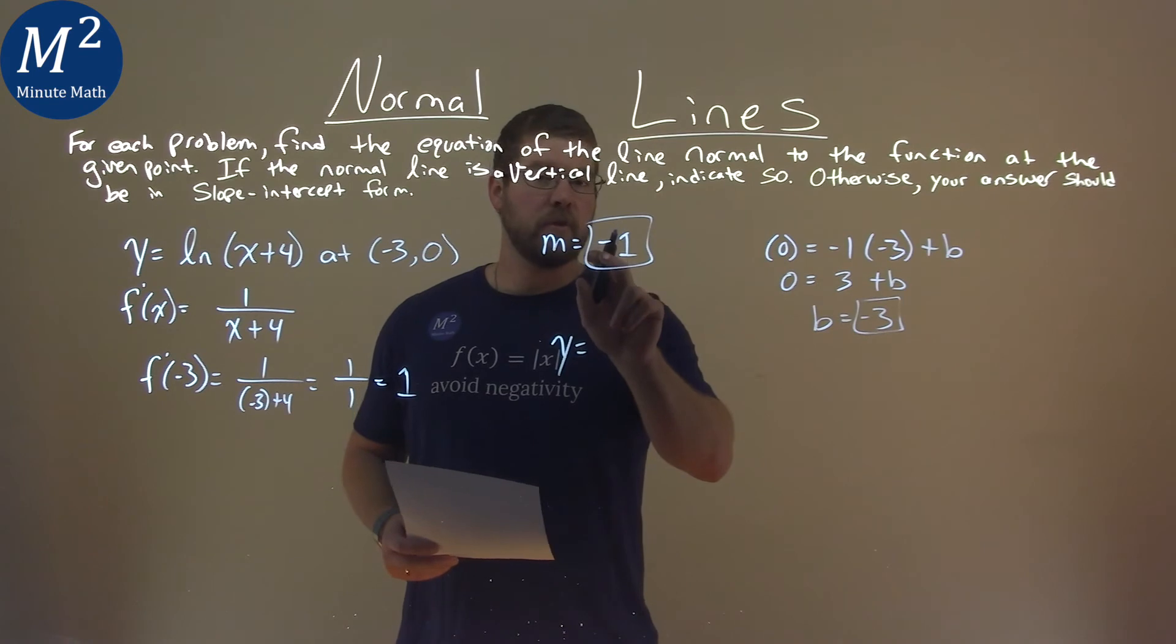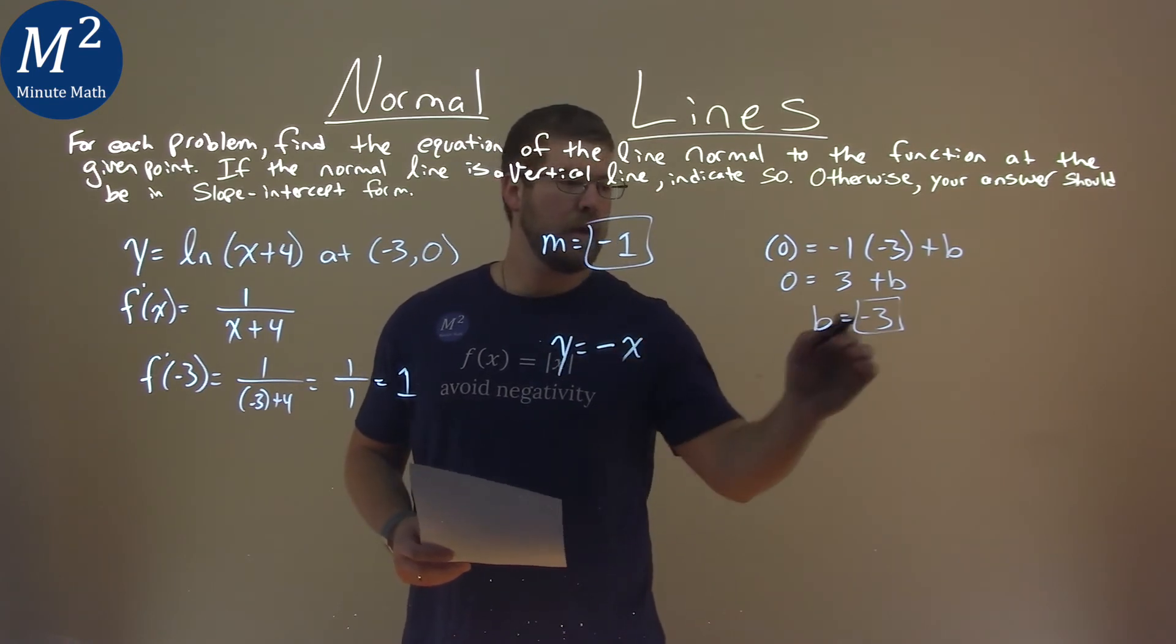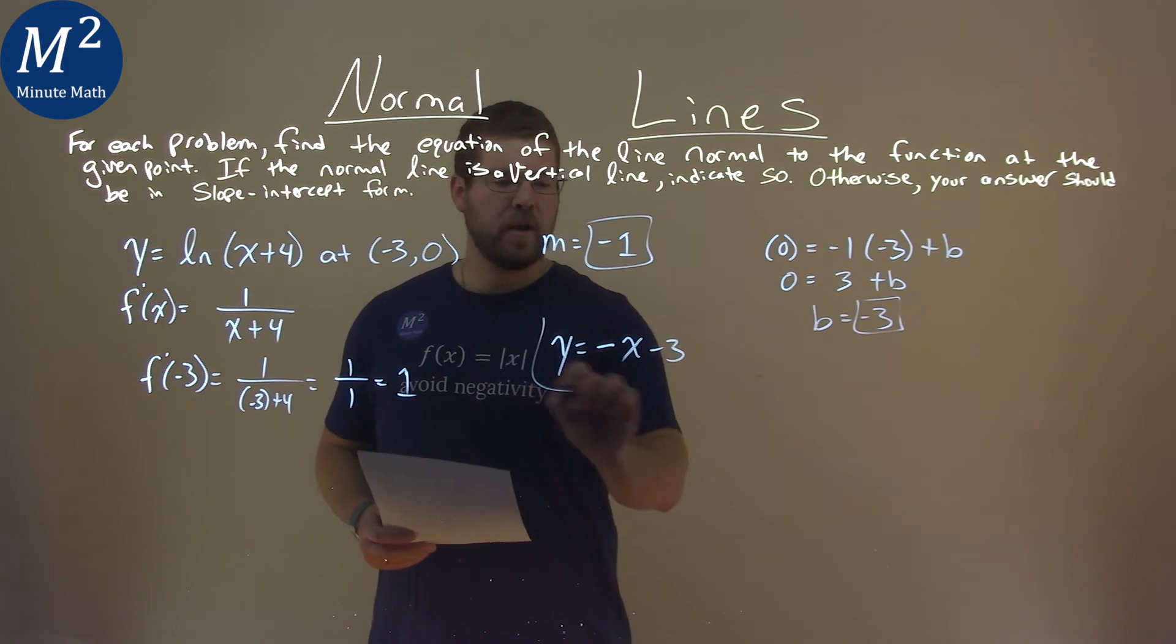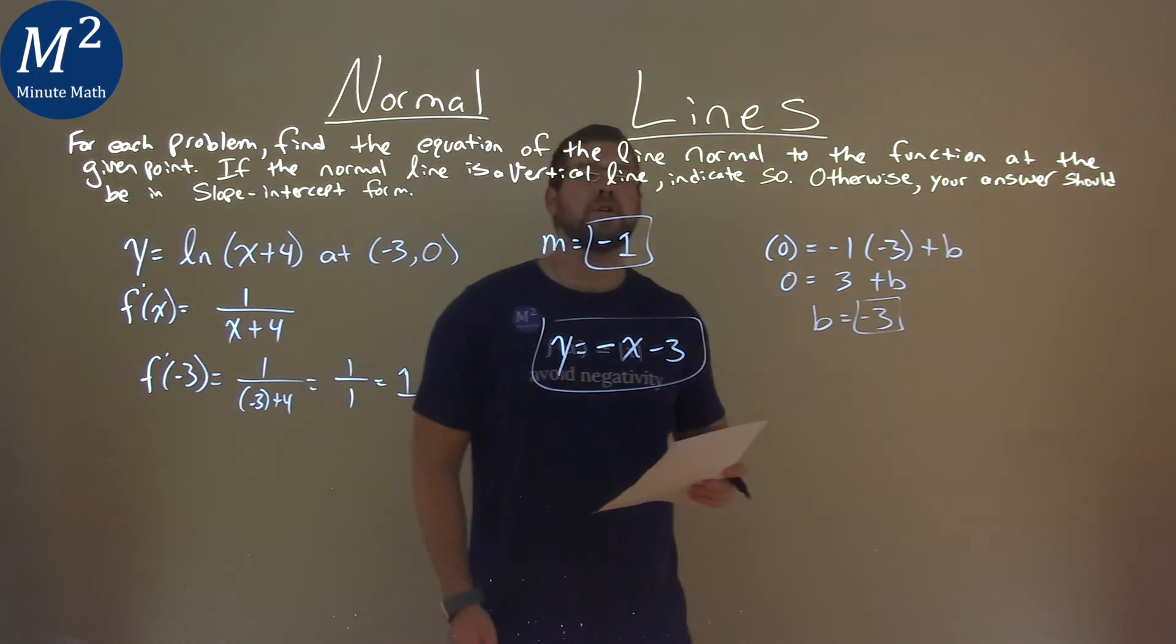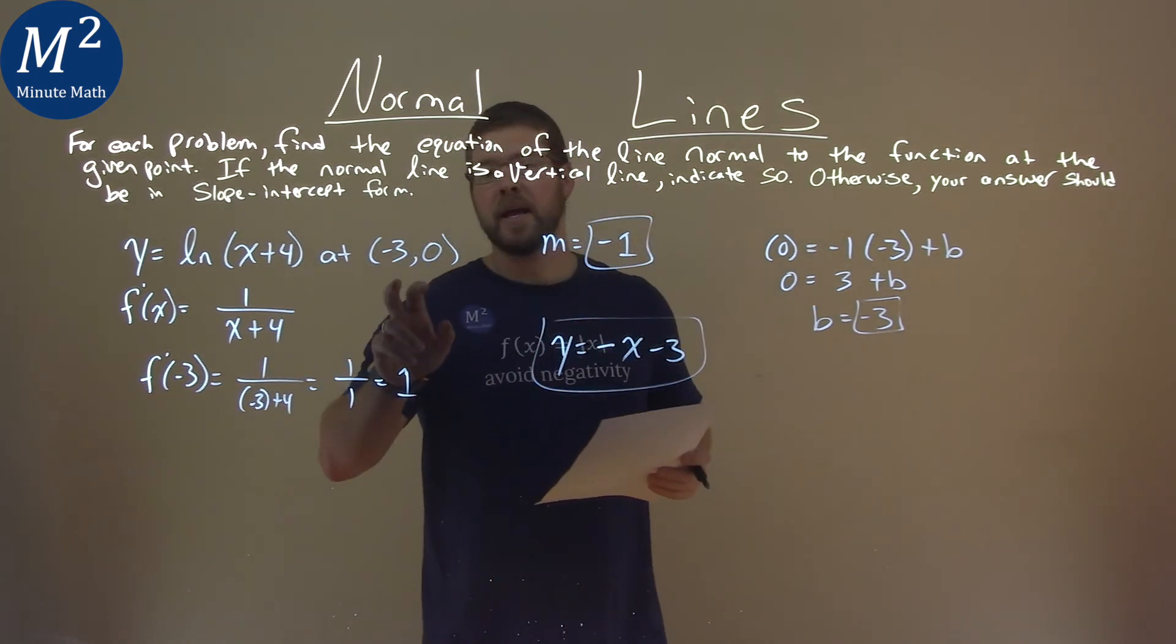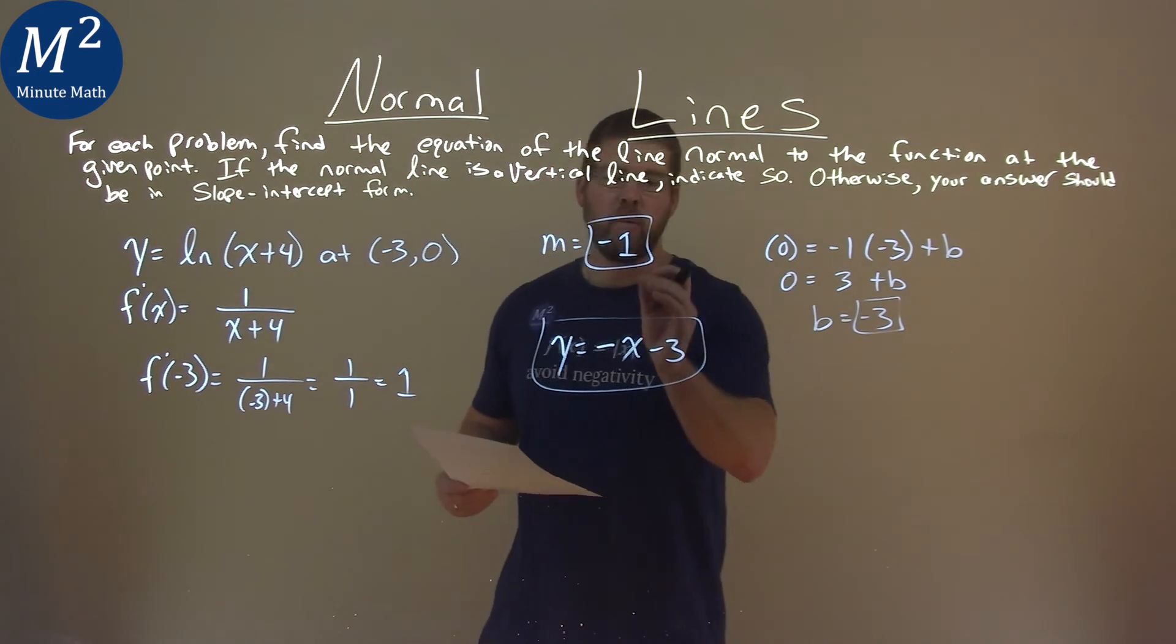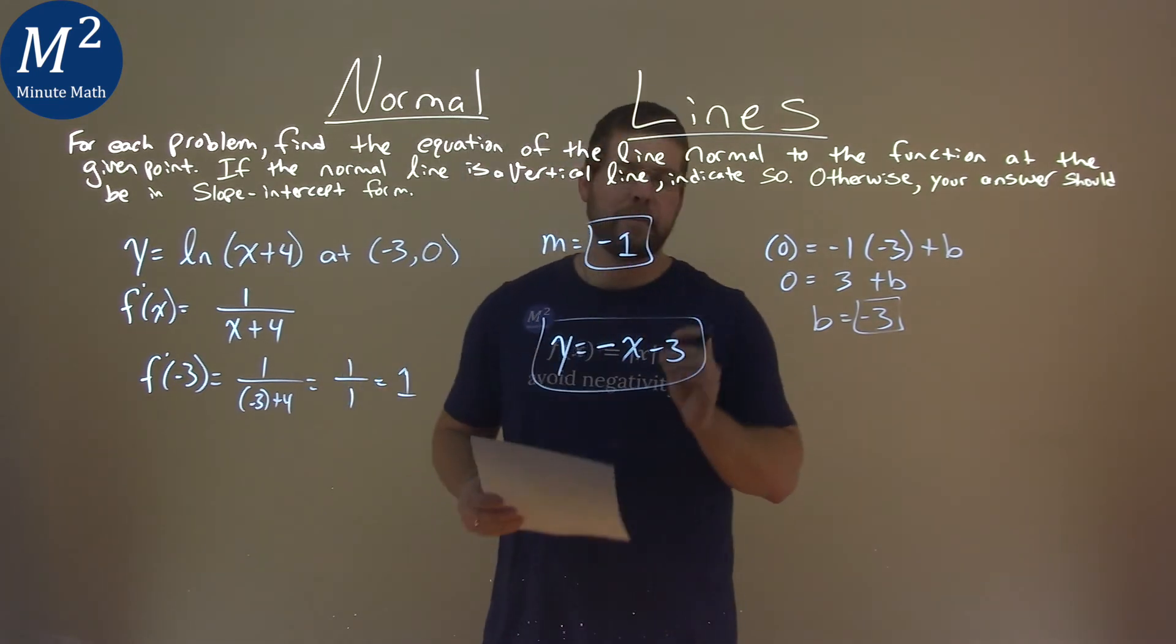y equals our slope negative 1. Just put a negative there, x minus 3. And there we have the equation of the line normal to the function at negative 3, 0 is y equals a negative x minus 3.